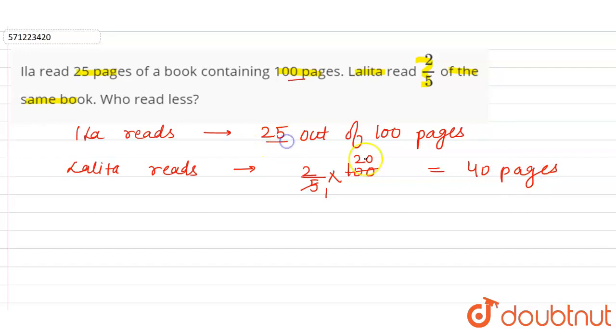And we have to tell who read less pages. So it is Ila who reads 25 pages. So Ila reads less number of pages than Lalita.